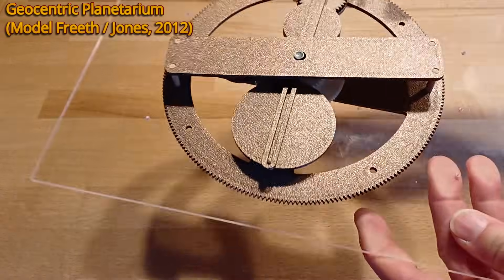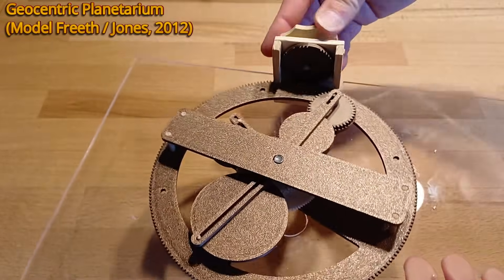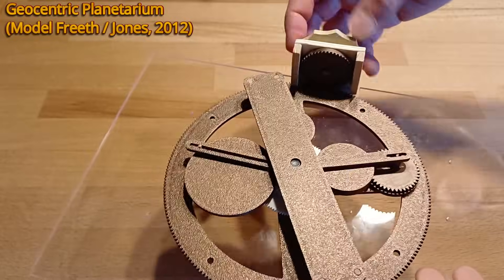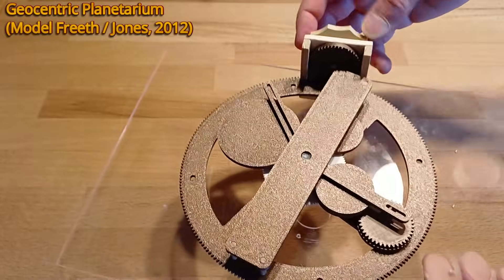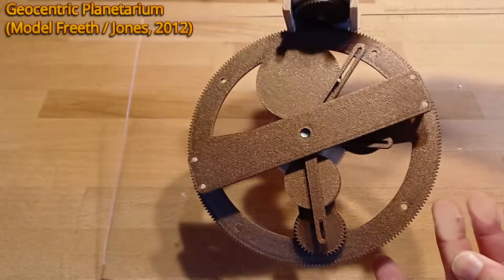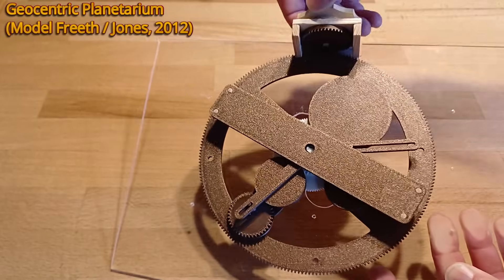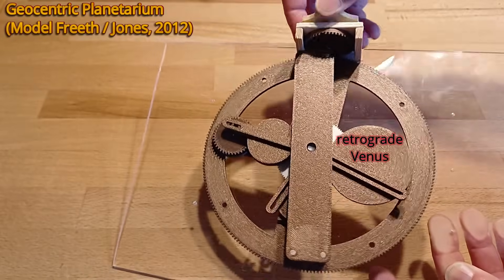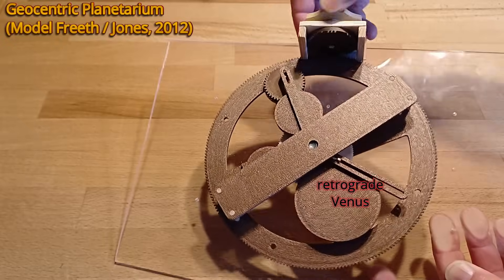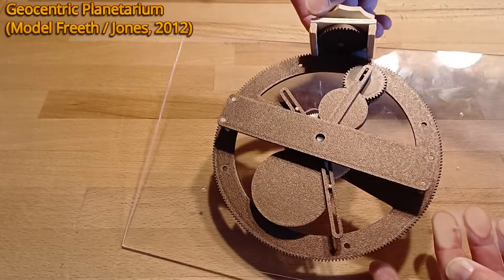When the drive wheel turns, the Mercury and Venus wheels turn according to the orbital periods. And this movement is transmitted to the follower arms via the pins. This also includes the retrograde movements of the planets, which can occasionally be observed in the sky.